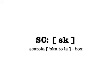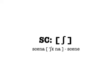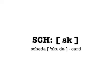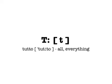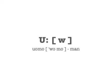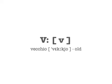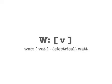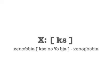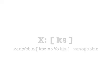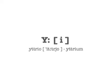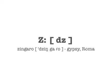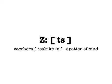S as in sempre, or Z as in sbarra. SK as in scatola, or SH as in scena. SK as in scheda. T as in tutto. U as in uva, or W as in uomo. V as in vecchio. W as in wolframio, or V as in vat. X as in xenofobia. Y as in yogurt, or I as in ietrio. Z as in zingaro, or TS as in zaccera.